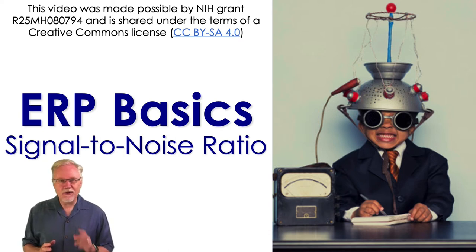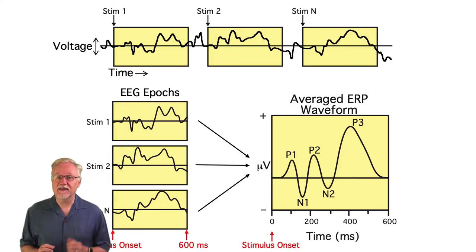By noise, I don't mean sounds, I mean random fluctuations in the EEG. We use signal averaging to deal with these random fluctuations.